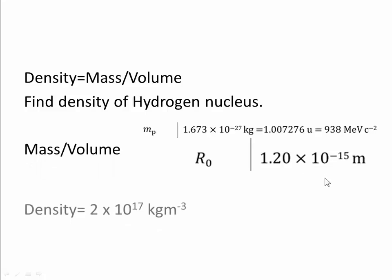And from that, you can work out that the density will be approximately 2 times 10 to the 17 kilograms per meter cubed, which is a huge density.